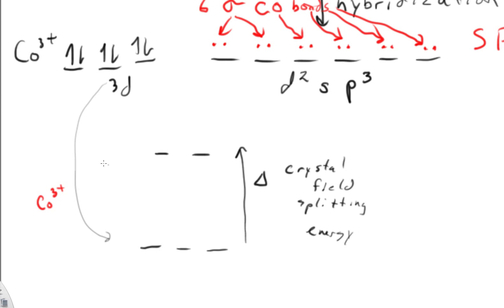We name these two orbitals EG. And we call these three orbitals T2G. So that's the names of those sublevels that's been split.